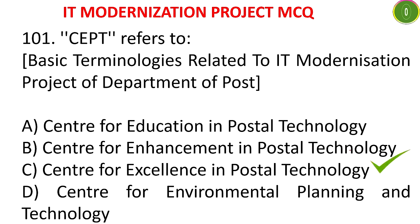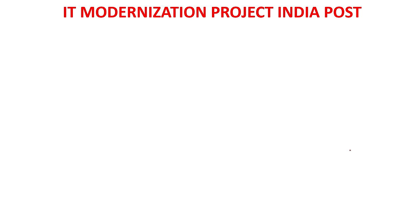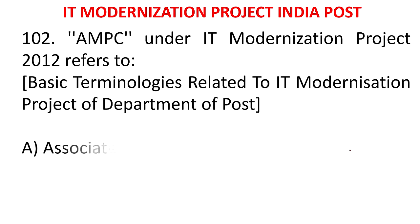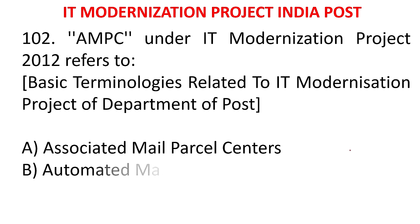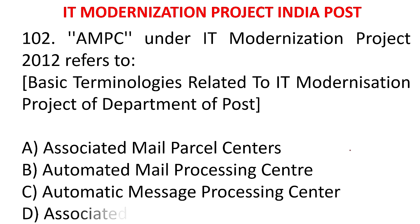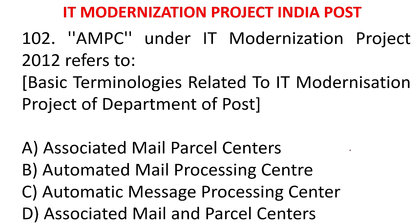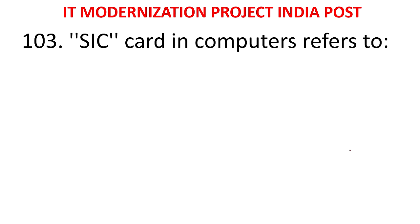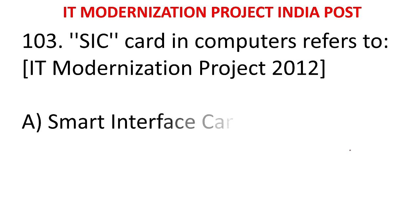MCQ 98: AMPC under IT modernization project refers to - A) Associated Mail Parcel Centers, B) Automated Mail Processing Centers, C) Automatic Message Processing Center, D) Associated Mail and Parcel Centers. The answer is Automated Mail Processing Centers.